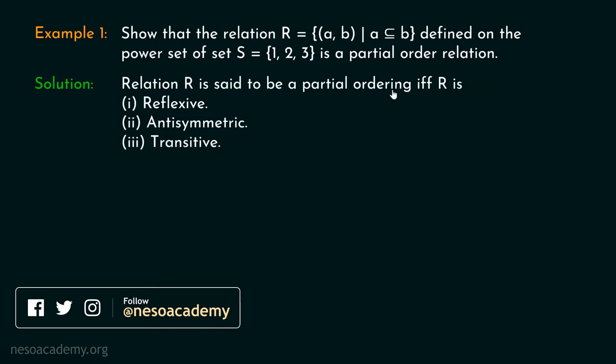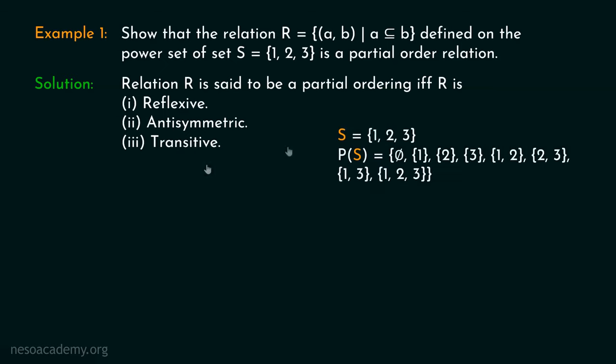A relation R is said to be a partial ordering if and only if R is reflexive, anti-symmetric and transitive. We know that set S consists of elements 1, 2 and 3. The power set of S consists of all subsets: phi, {1}, {2}, {3}, {1,2}, {2,3}, {1,3}, and {1,2,3}. This relation R is defined on the power set of S, and R is the set of all ordered pairs (A, B) such that A is a subset of B.